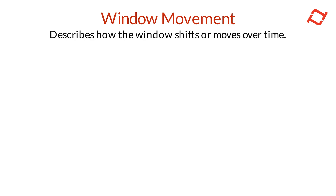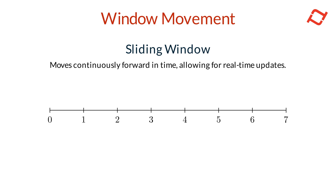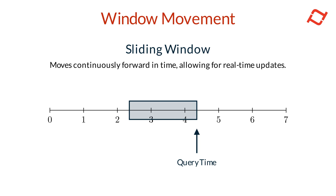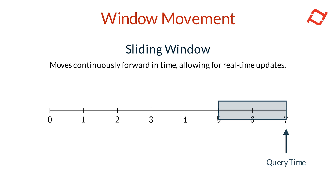Window movement describes how the time window shifts or moves over time. Depending on the kind of feature view you use and how frequently it's updated in the online store, your aggregation window will move differently. The first kind is a sliding window — a windowing mechanism where the window moves forward continuously over time, capturing real-time data dynamically. The window slides along the timeline, constantly shifting as new data arrives, and at any given moment includes the most recent data points based on the specified window duration. This approach maintains high data freshness, making it ideal for real-time use cases.